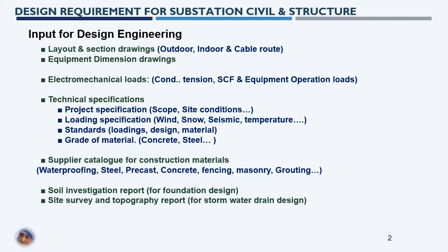Next is the technical specification. Generally, technical specifications can be classified into four categories. The first is project specification, which provides information about scope and site conditions — whether the site is in a particular terrain category, a low-level area, a water-prone area, or a hilly area. The second is load specification — what loads should be considered for civil and structural design, such as wind, snow, seismic, temperature, and, for industrial substations, dust load.